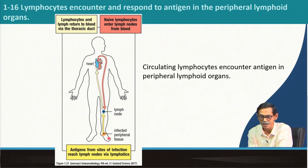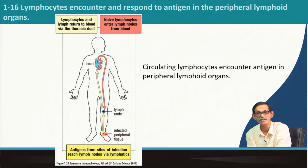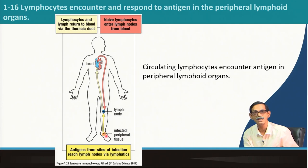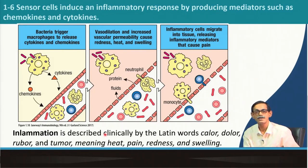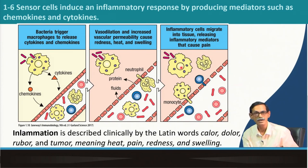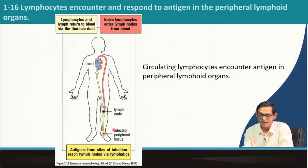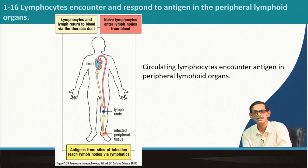If you see the picture carefully, this is the place in the leg, in the foot actually, the infected peripheral tissue. So there is some infection here. In infection, the first thing that happens is the innate part of immunity, which is the inflammatory response. All these macrophages and dendritic cells pick up the infected organism and then bring it to the nearest lymph node.